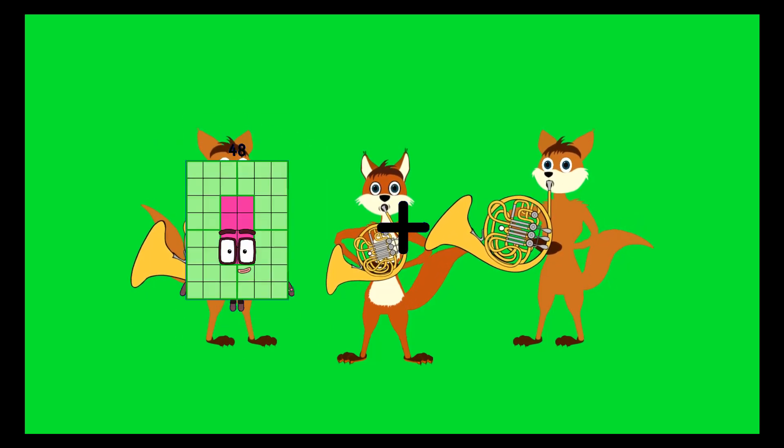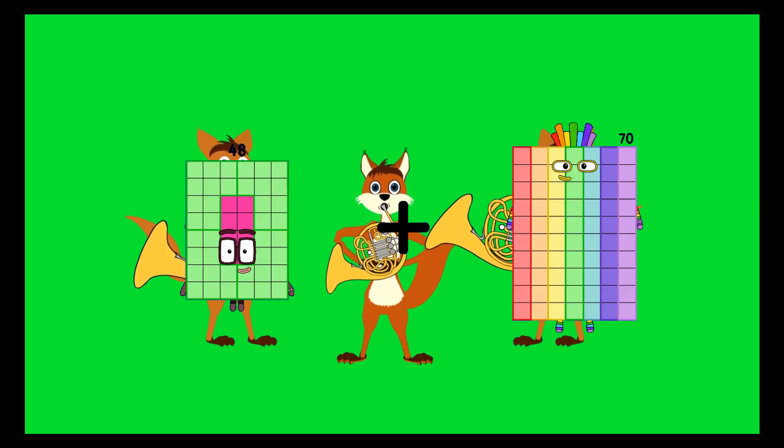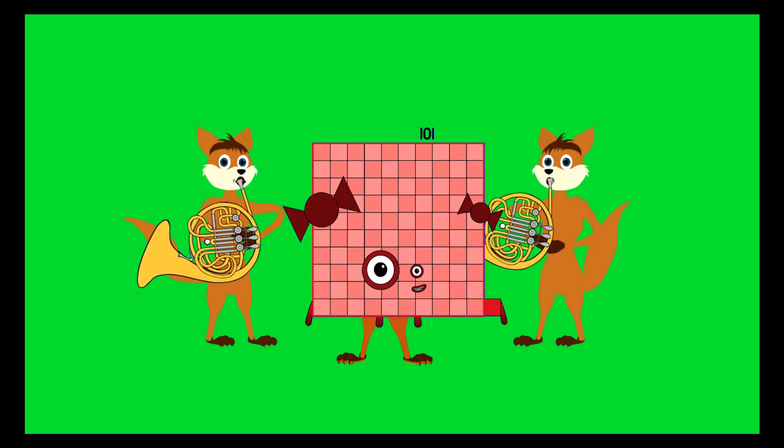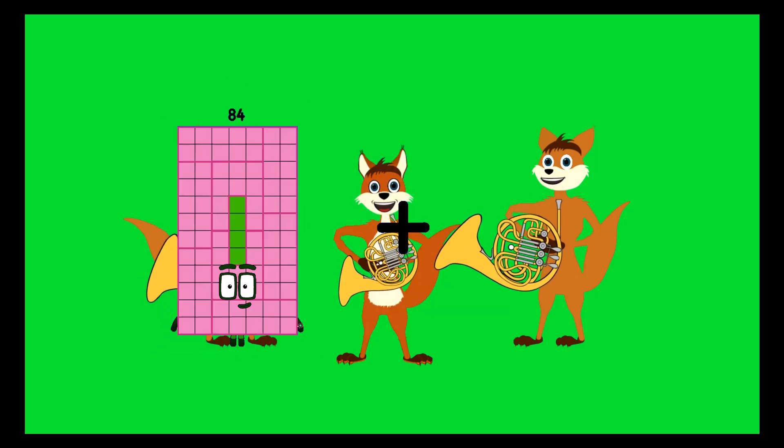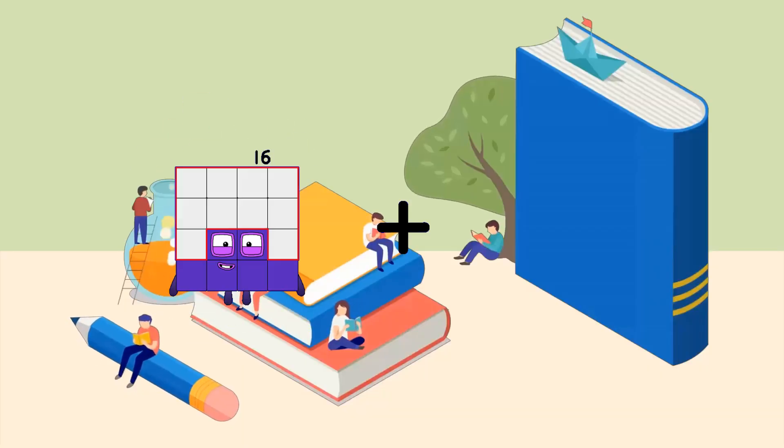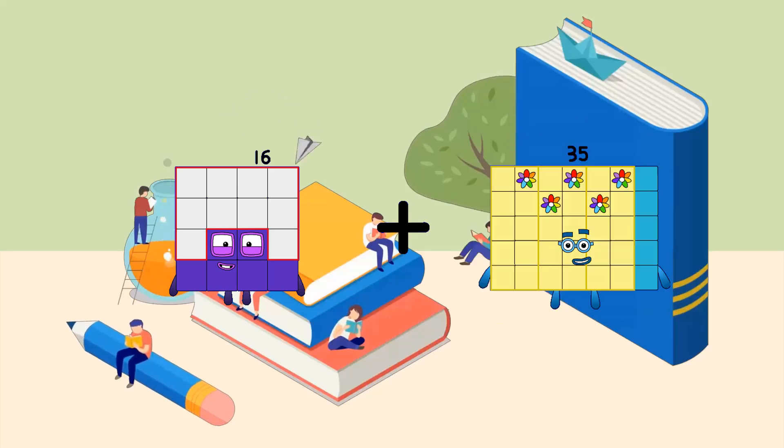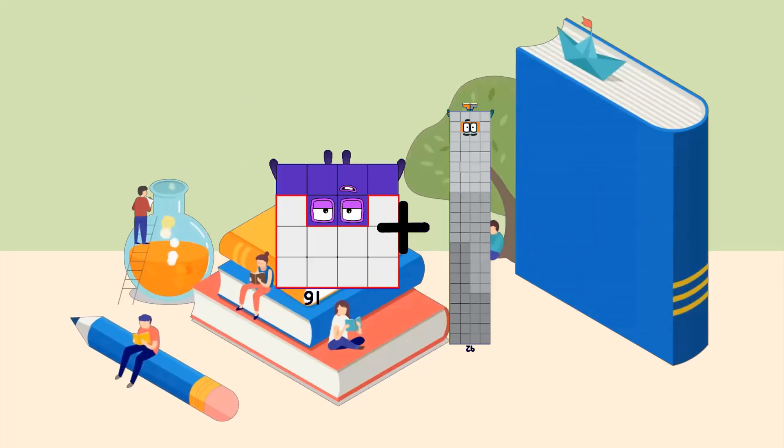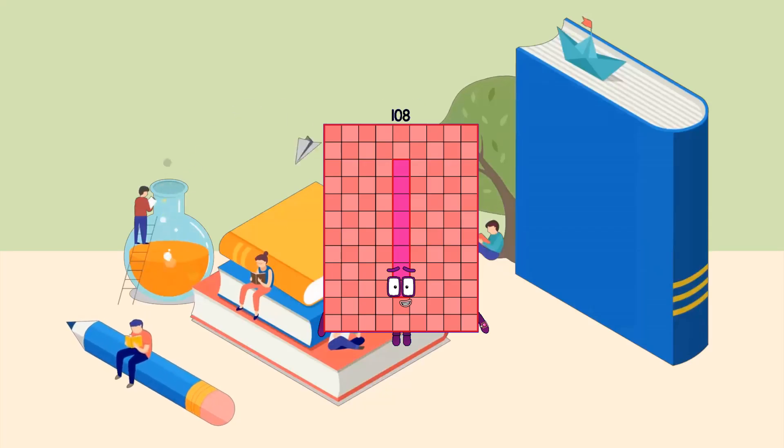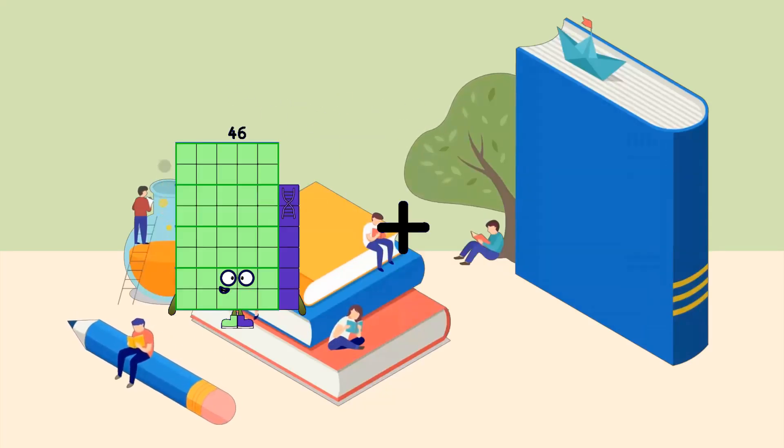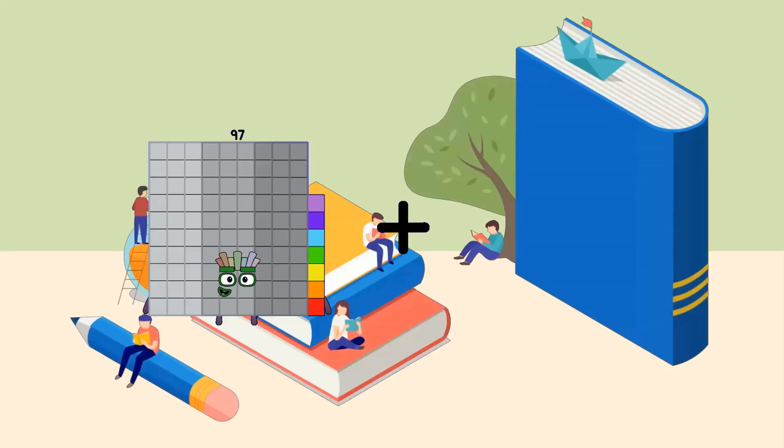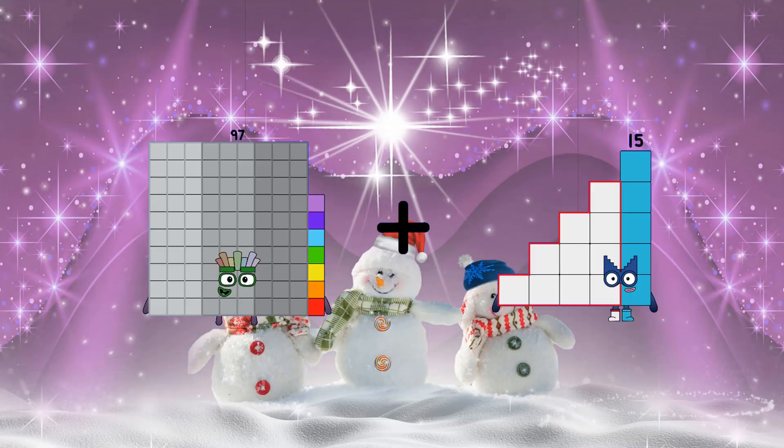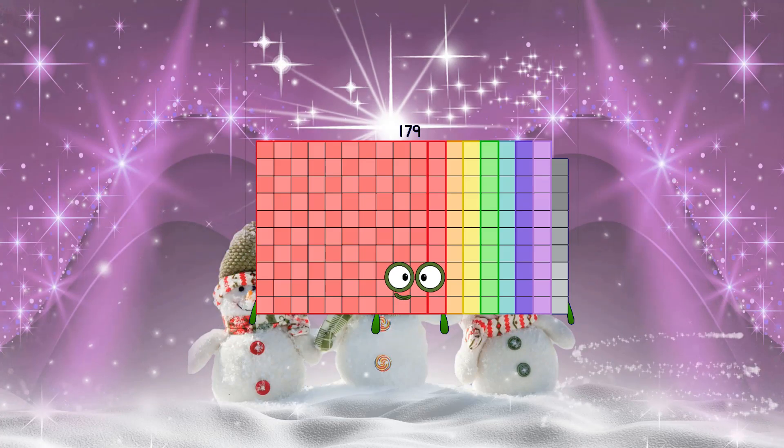48 plus 53 equals 101. 16 plus 92 equals 108. 97 plus 82 equals 179.